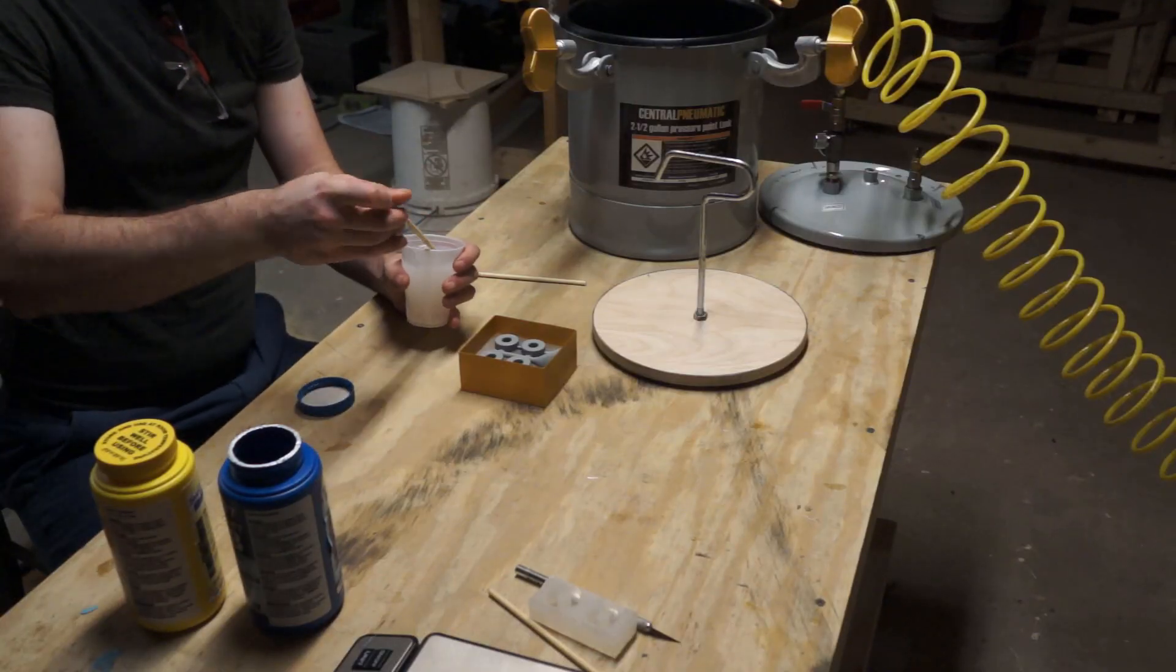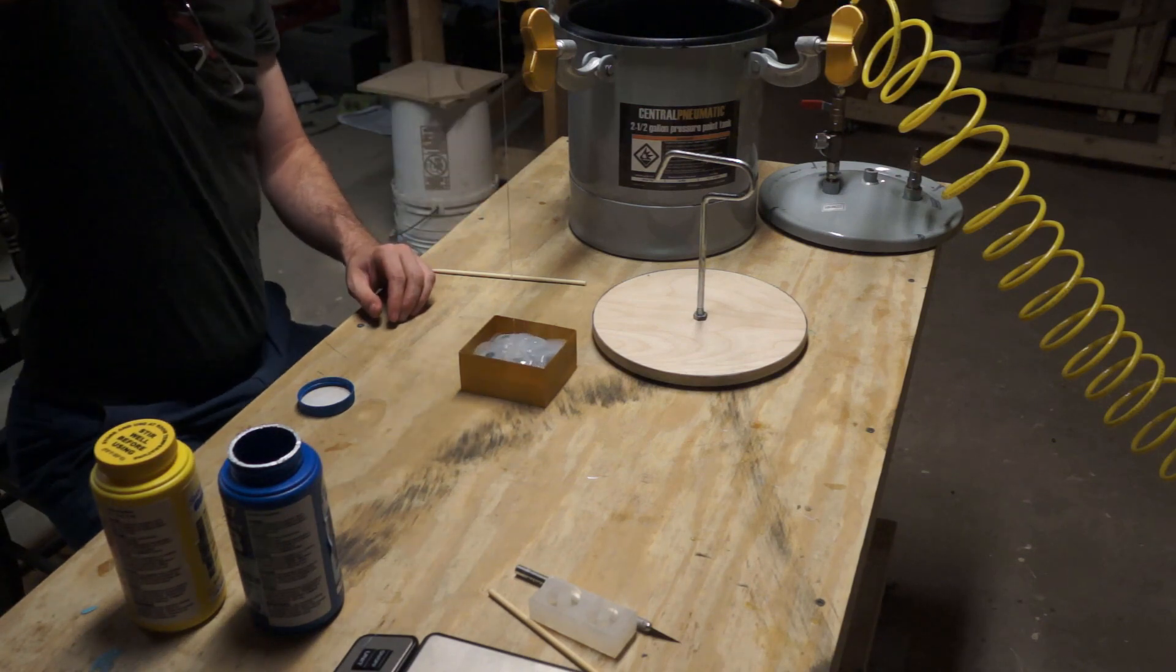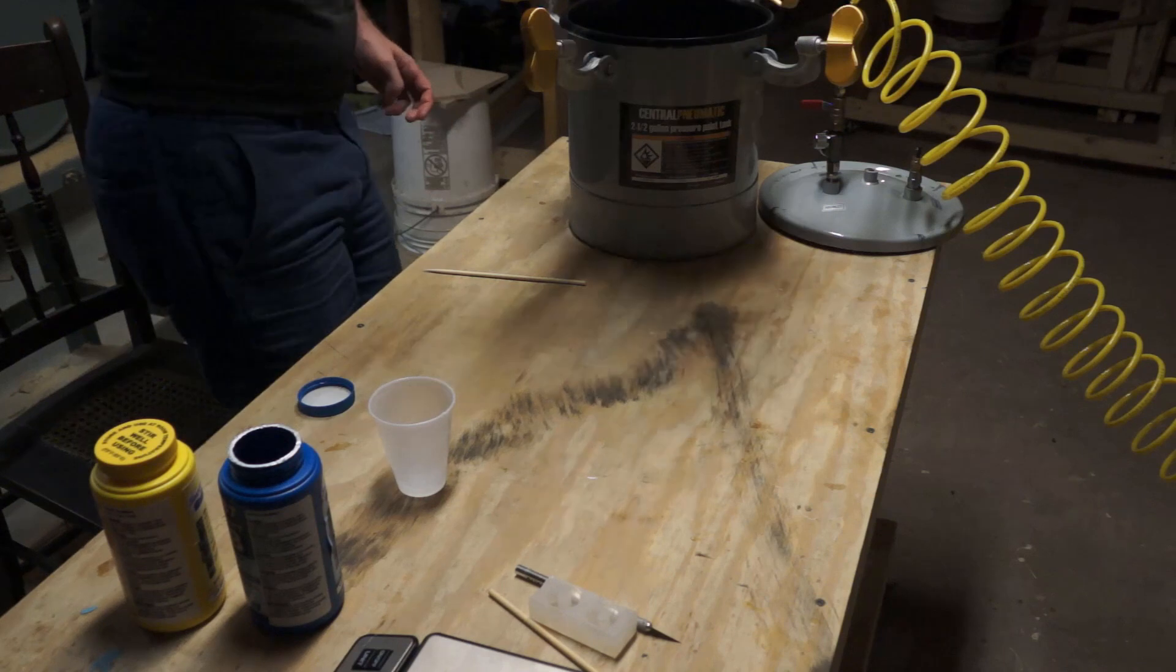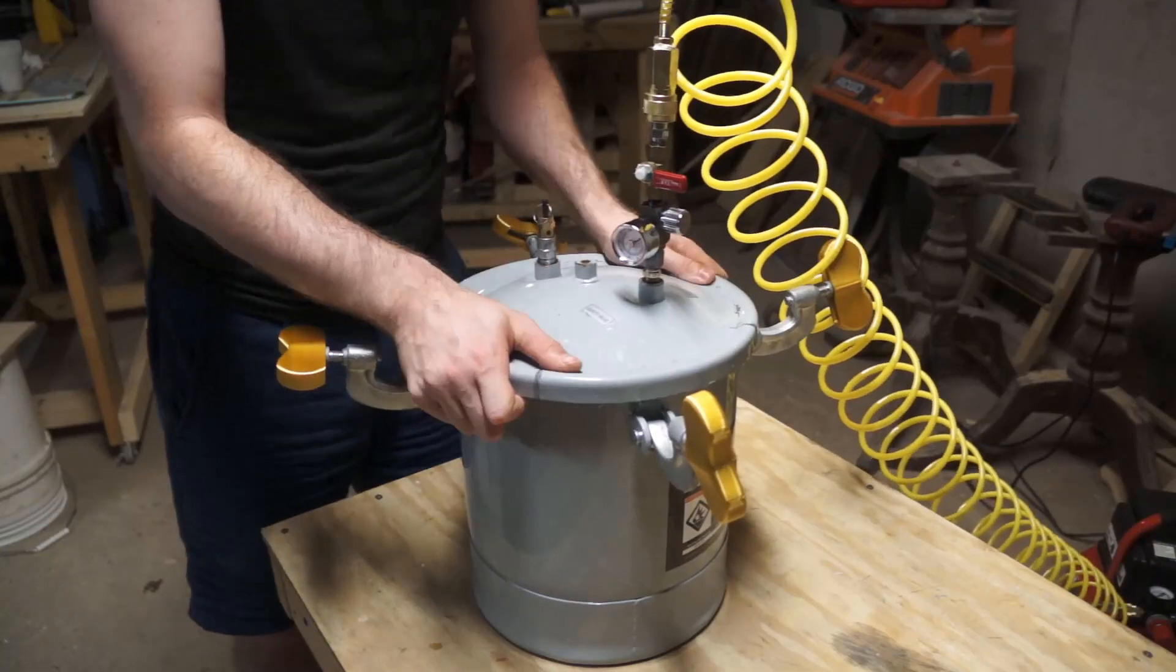Then I mixed and poured the silicone for the second half of our mold. Dropped it into the pot and pressurized.